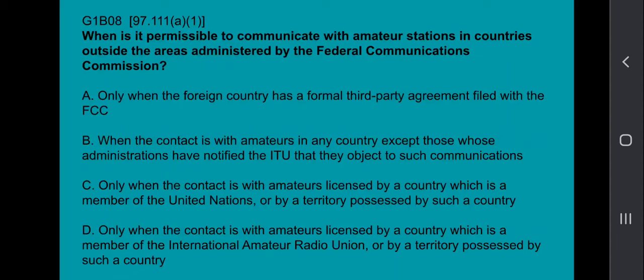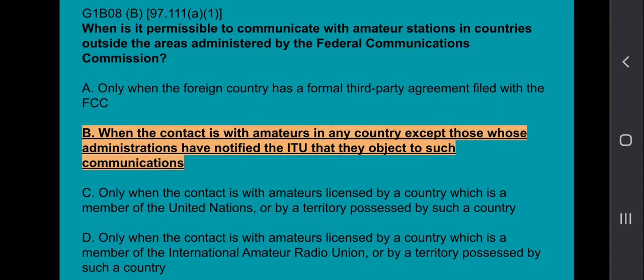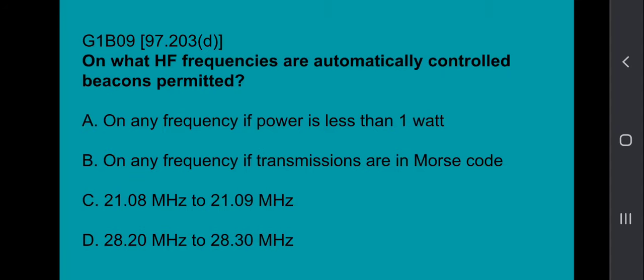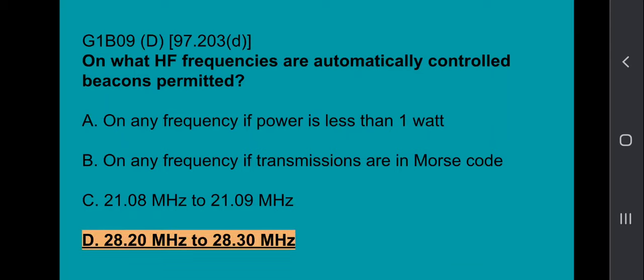G1B07: What are the restrictions on the use of abbreviations or procedural signals in the amateur service? They may be used if they do not obscure the meaning of a message. G1B08: When is it permissible to communicate with amateur stations in countries outside the areas administered by the FCC? When the contact is with amateurs in any country except those whose administrations have notified the ITU that they object to such communications.